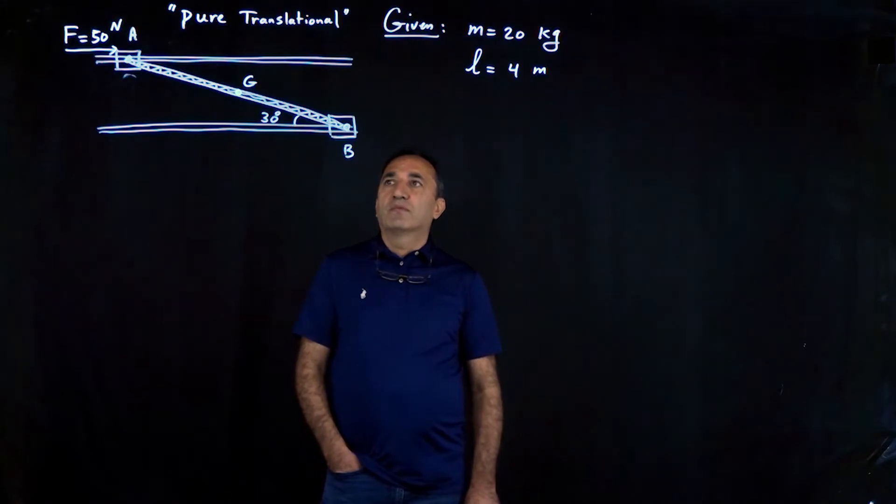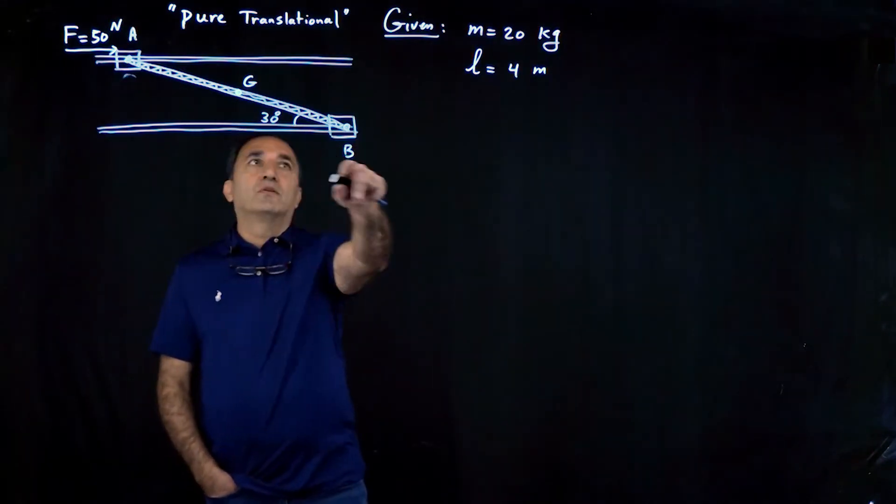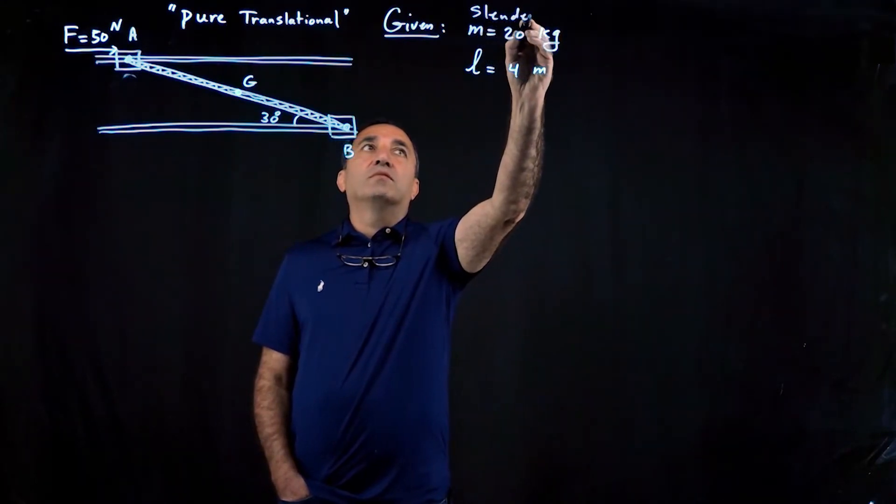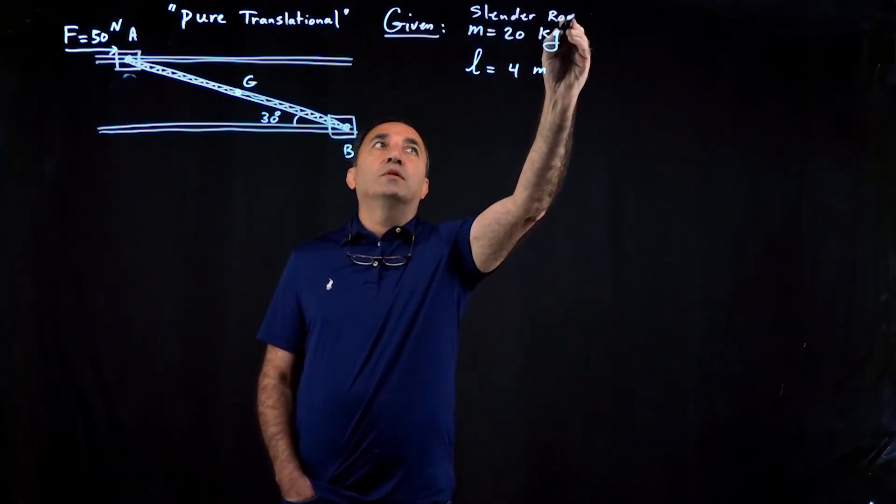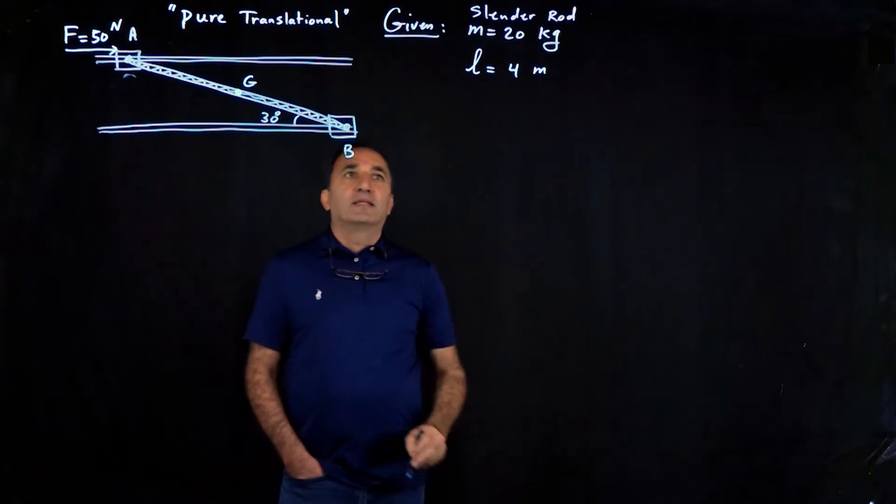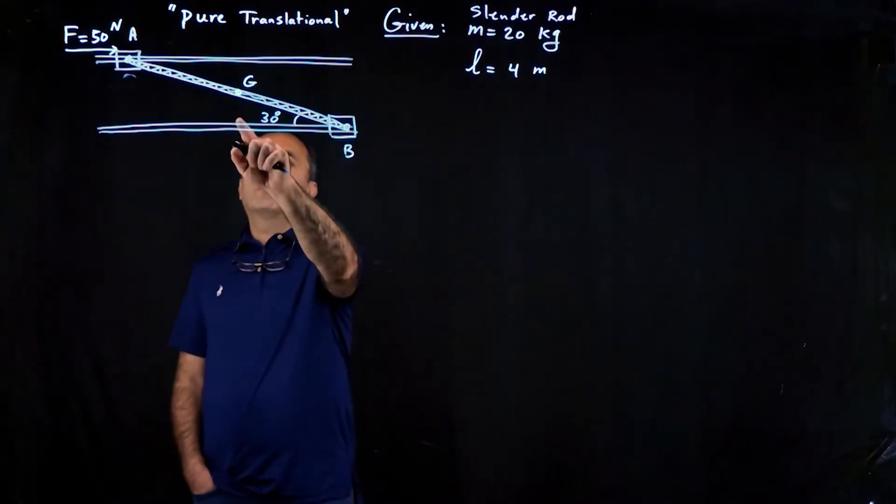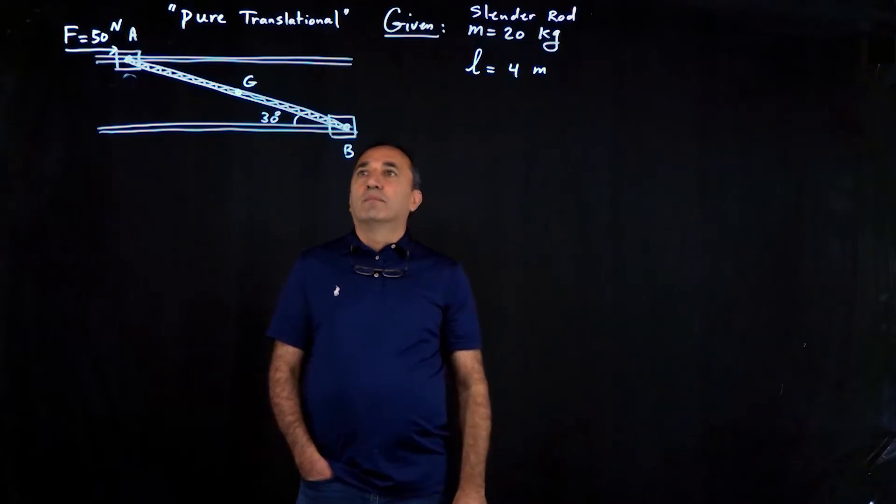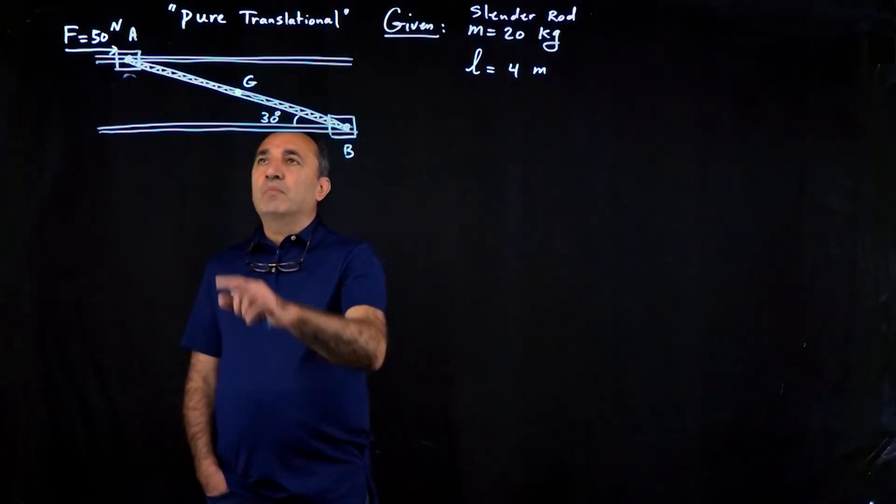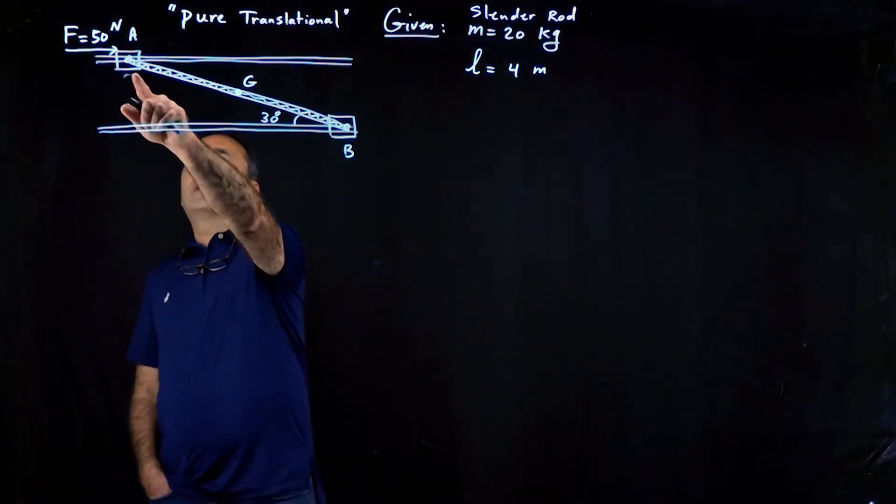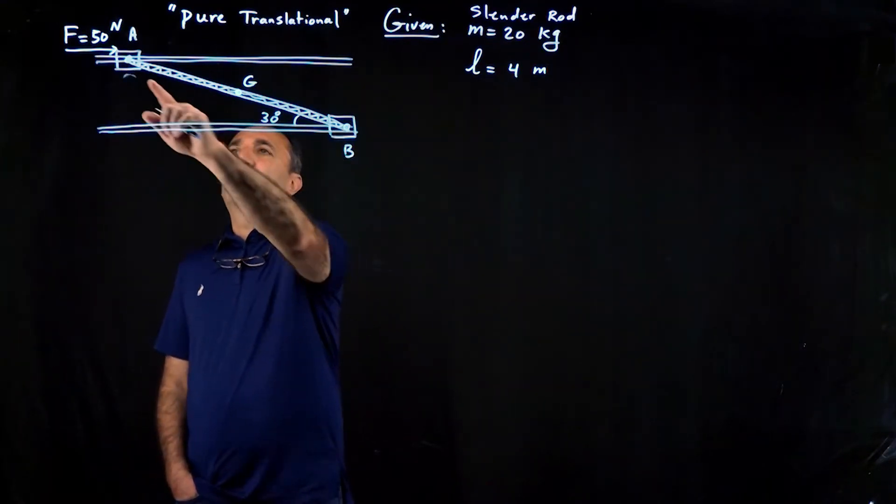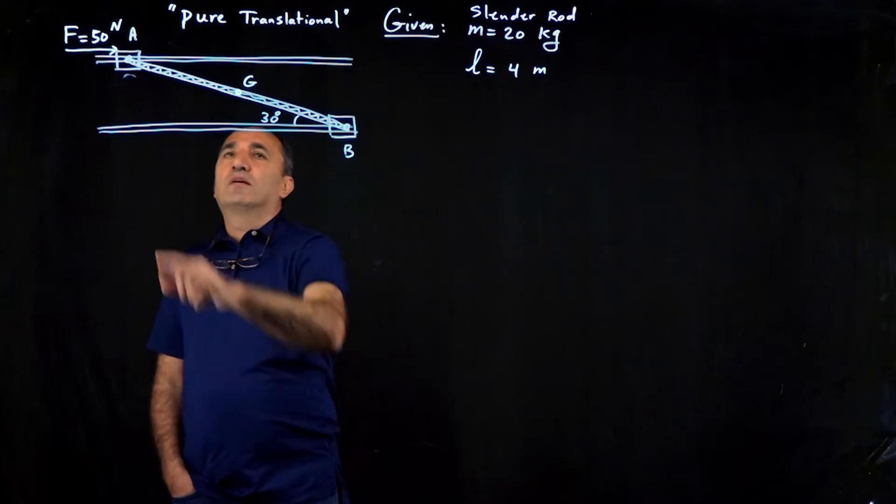So here we have this slender rod whose mass is given to be 20 kilograms and the length is 4 meters, so the center of gravity would be right in the center of it. And it's attached to two sliders where the mass of these sliders are negligible.